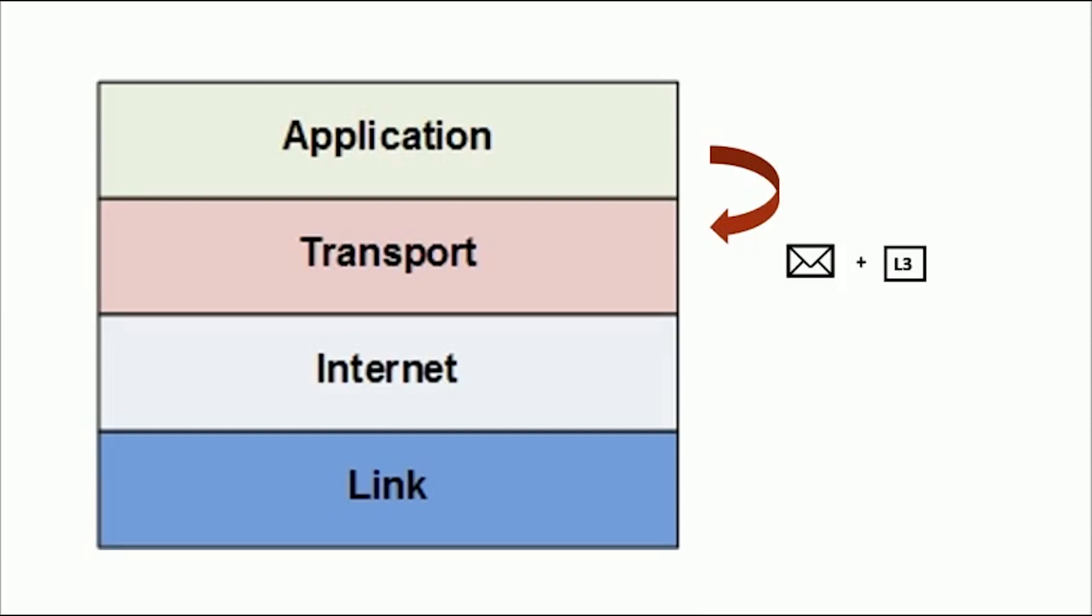The email is sent from application layer to the transport layer first. The transport layer would then encapsulate the data and adds its own header and process the data to the internet layer. The internet layer would then receive data and add its own header. The internet layer then passes data to the data link layer. This layer is the only layer that adds both header and trailer. The data is then sent through the physical network link. So this is how encapsulation occurs in TCP IP model.